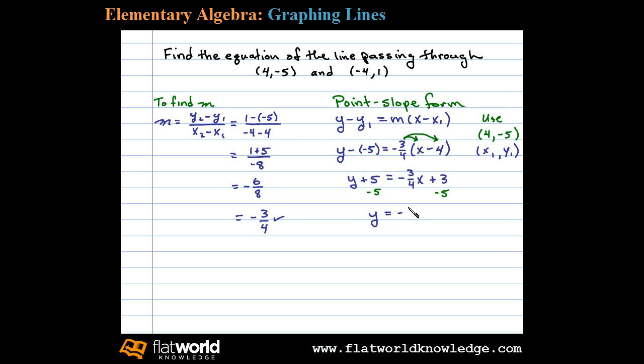Finally, we subtract 5 on both sides, and we have y = -3/4 x - 2. This is the equation of the line passing through the two given points.